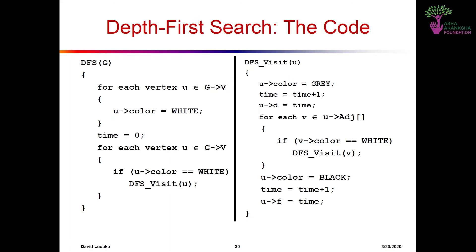We go back to A. From A also there are no more adjacent nodes we can go to, so we pop A out of the stack and backtrack to H. From H there is no more node to visit, so we pop out H and go back to G. From G also no more nodes — we pop out G and go back to E. From E also no more nodes, so we pop out E and go back to D. Finally from D we can see there is a node we can go to: F. F is unvisited and adjacent to D, so we decide to visit F.